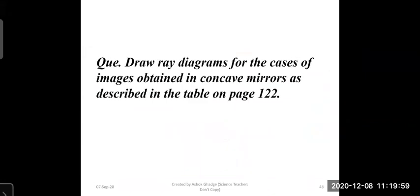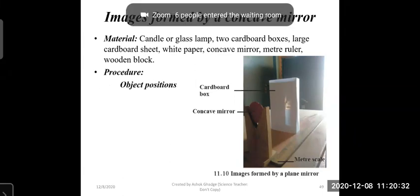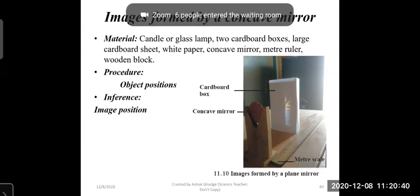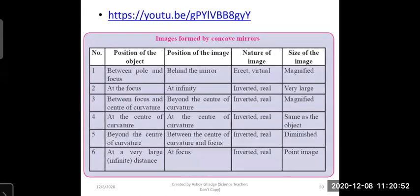Draw a ray diagram for the cases of images obtained in a concave mirror as described in the table on page 122. Materials required: candle or glass lamp, two cardboard boxes, large cardboard sheet, white paper, concave mirror, meter ruler, wooden block. In the procedure, note the object position — there are six positions. In the inference, record the position of the image, the size of the image, and the nature of the image.